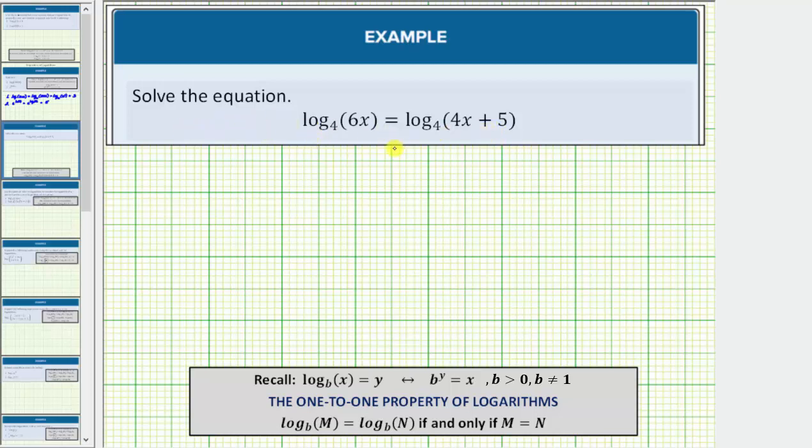We are asked to solve the given log equation. This is one of the more straightforward log equations we will be solving. We're given log base 4 of 6x equals log base 4 of the quantity 4x plus 5.